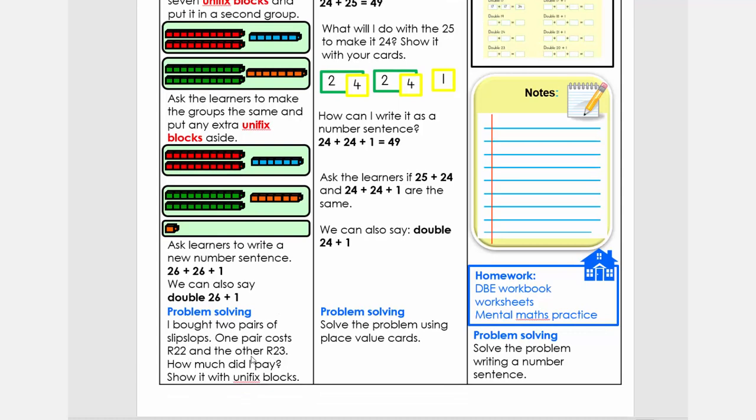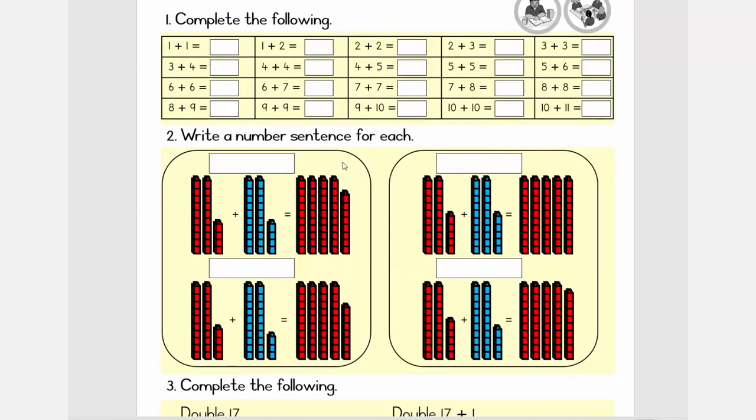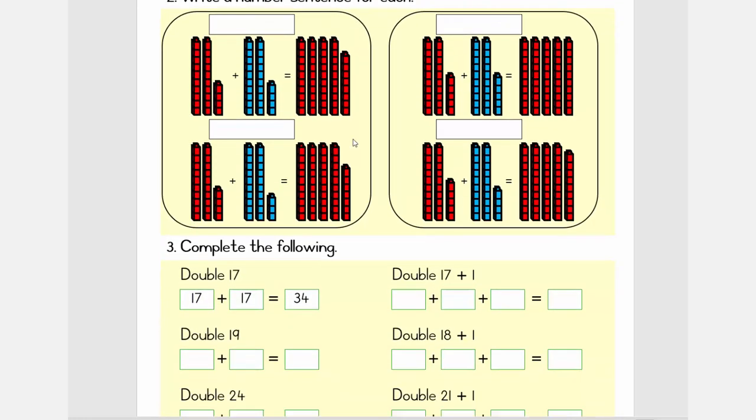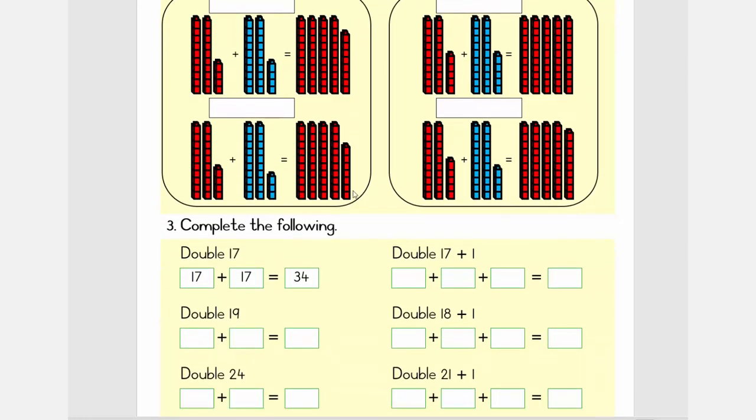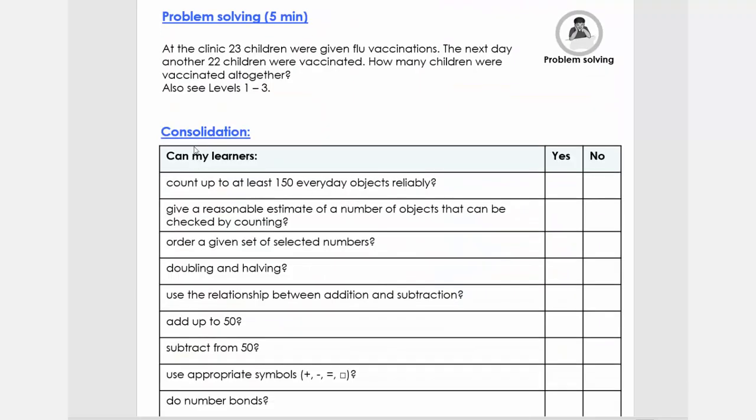Then you can do the problem solving. The problem solving again is on level 1 is use your concrete resources. You can do these two steps at the same time where you use the concrete resources and place value cards. Or you can solve the problem on an abstract level. So let's go to the worksheet. So you have the worksheet here or what we have done in the lesson.